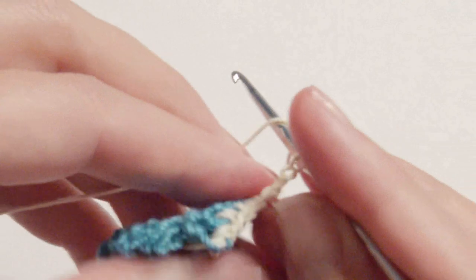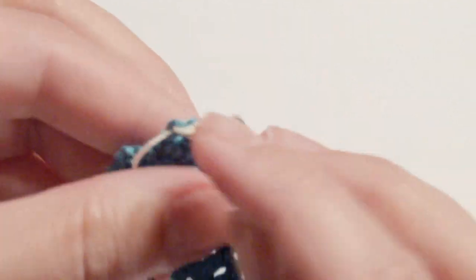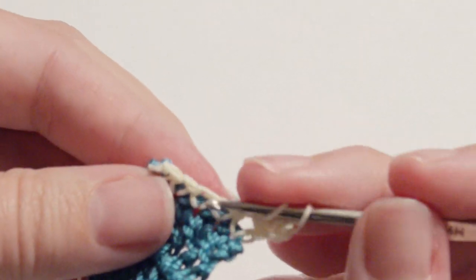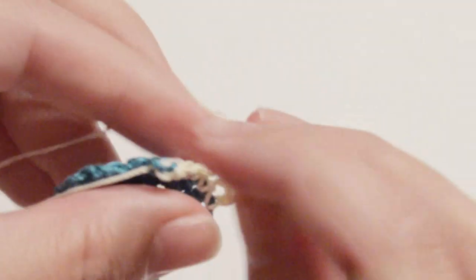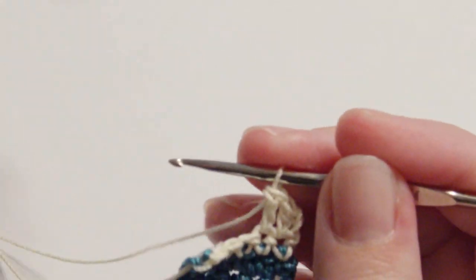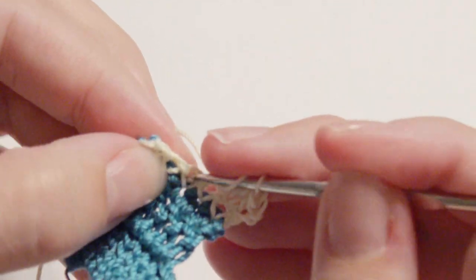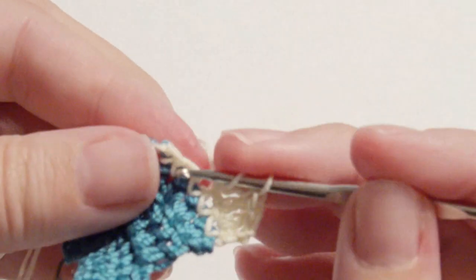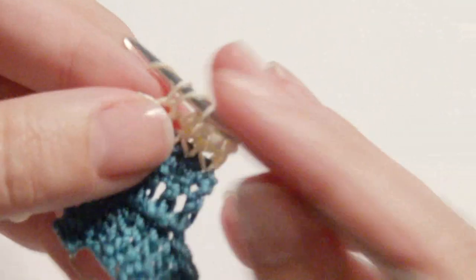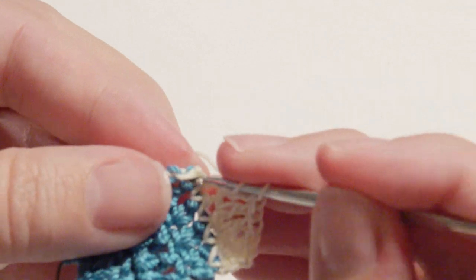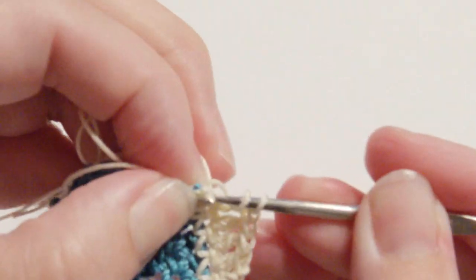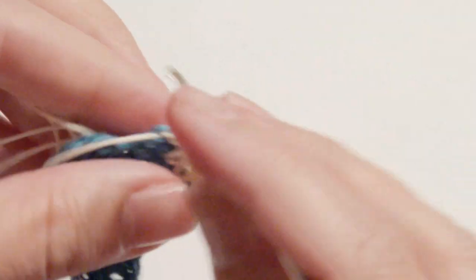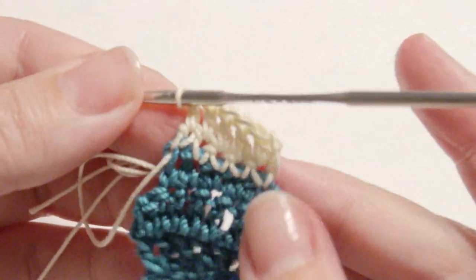Chain two and turn and work one double crochet in each stitch across. Chain three and turn and work one single crochet in the next five stitches.